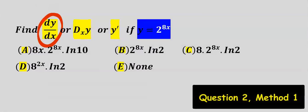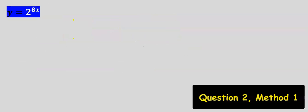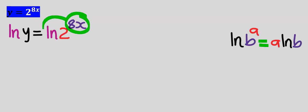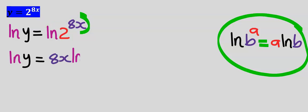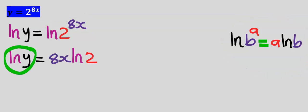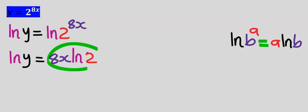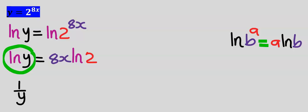Next, let's find the derivative of this function. Step number one: take the natural log of both sides. The 8x power comes down to the front of the natural log according to the log power rule. Next, differentiate using implicit differentiation — differentiating the natural log of y gives one over y, but because we differentiated y and not x, we multiply by dy/dx.